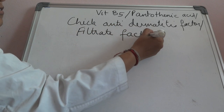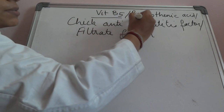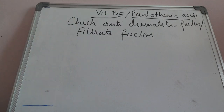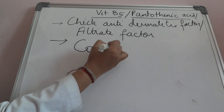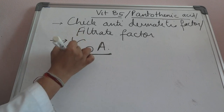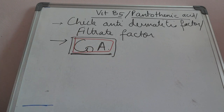We are discussing vitamin B5, that is pantothenic acid, first because it is the most important of the vitamin B complex. It helps in the formation of a very special moiety, that is coenzyme A. Coenzyme A is required in various metabolic reactions. It takes part in the tricarboxylic acid cycle, lipid metabolism, carbohydrate metabolism, and it is also connected to protein metabolism.